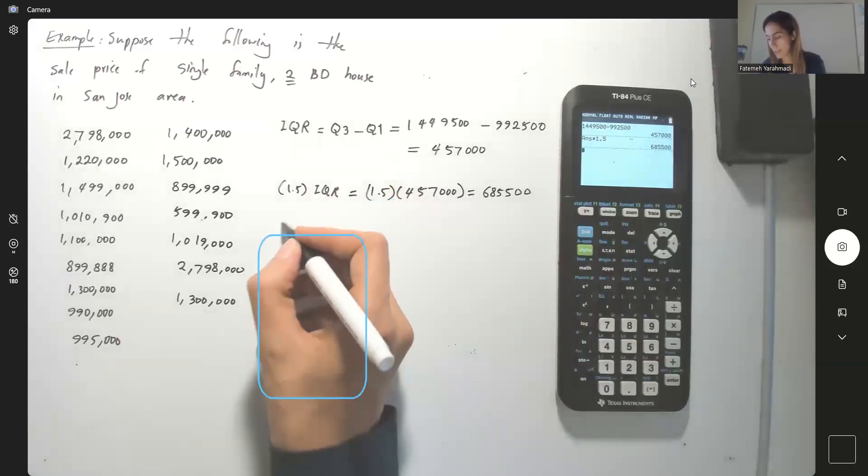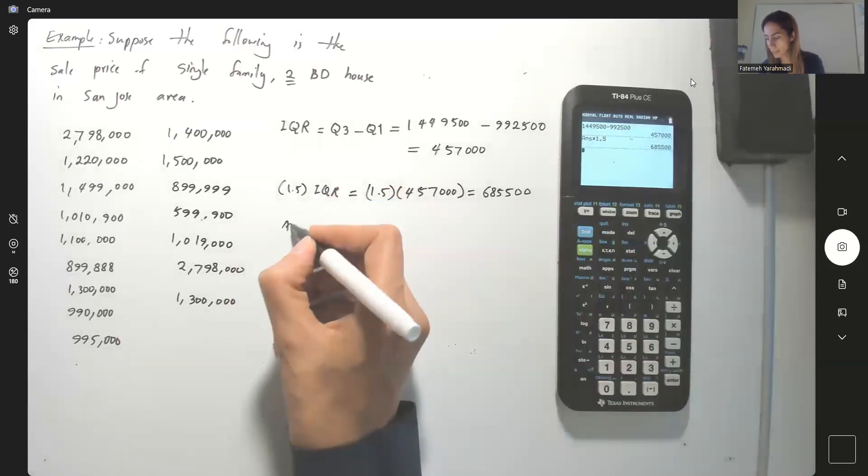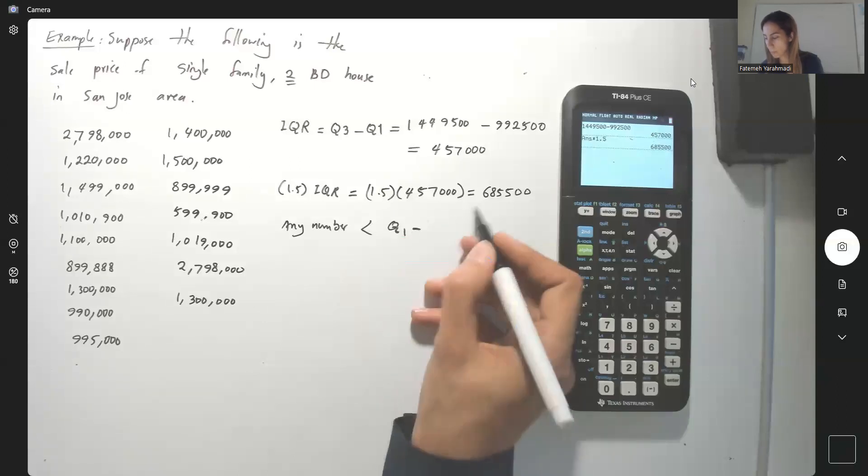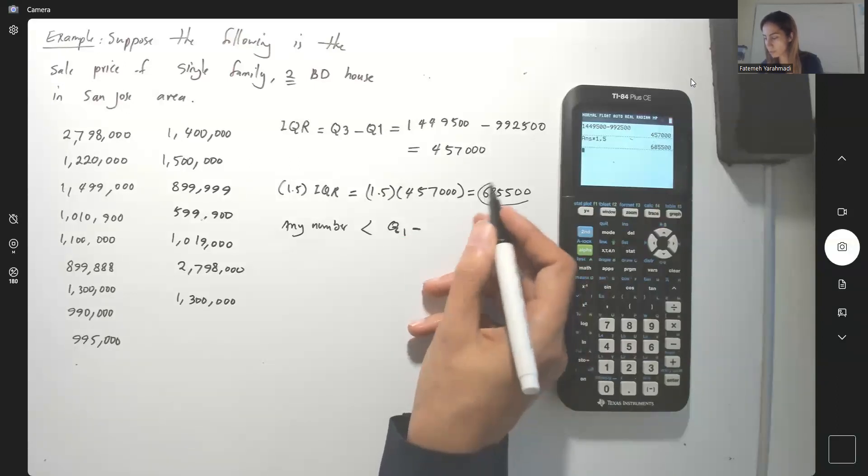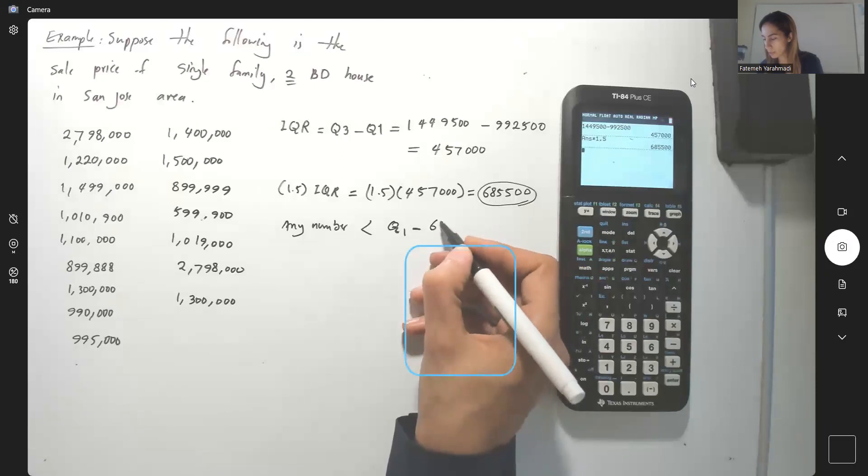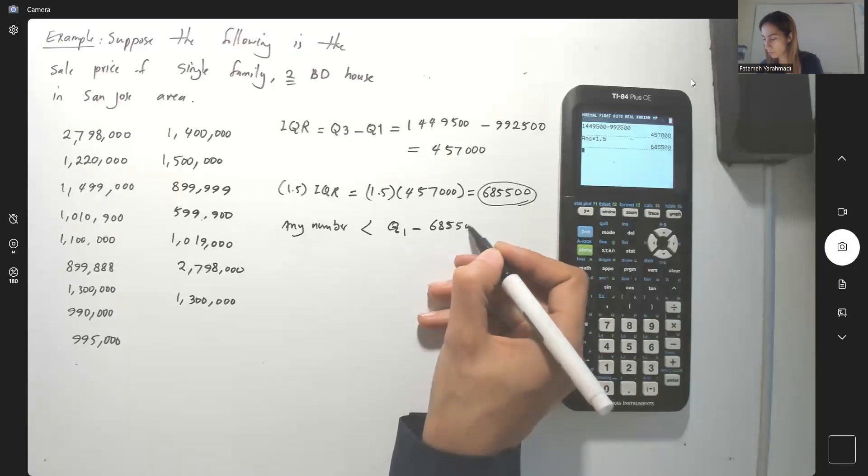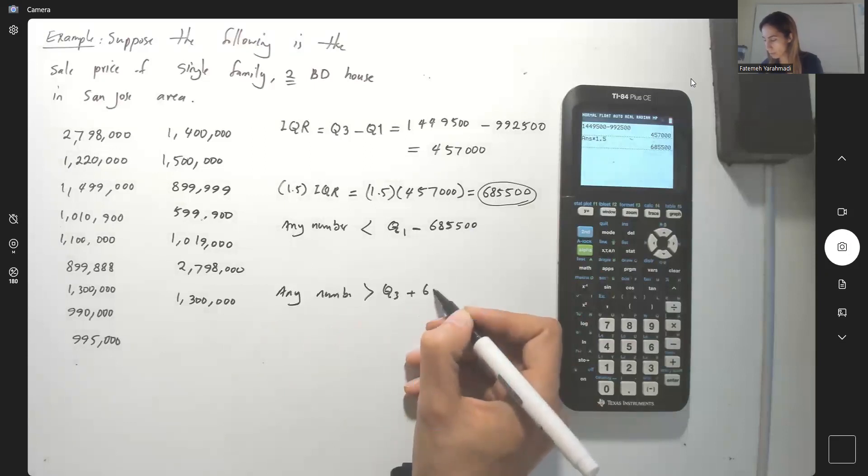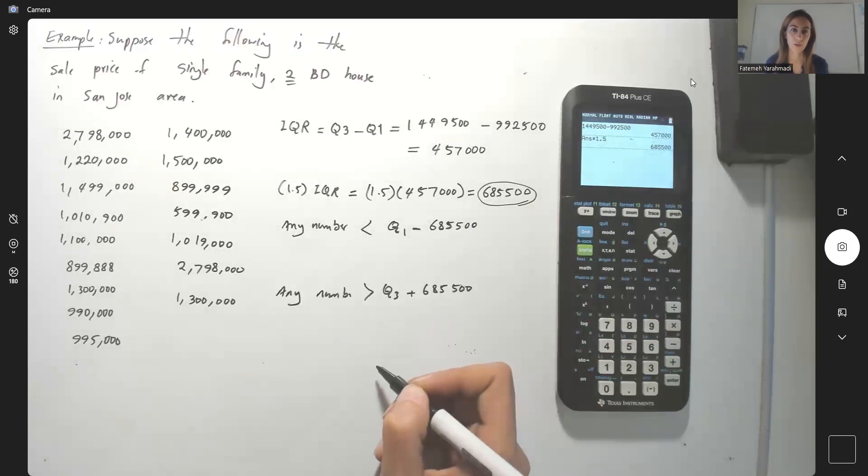Then any number less than Q1 minus this value that you calculated, 685,500, and any number more than Q3 plus 685,500 is an outlier.